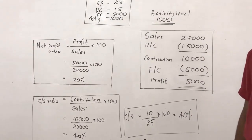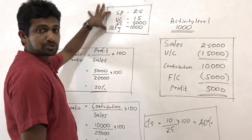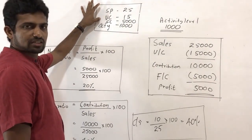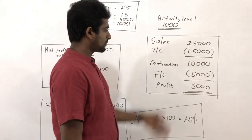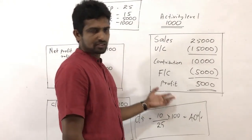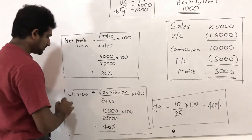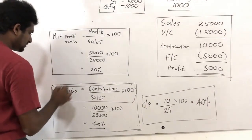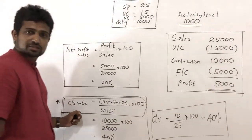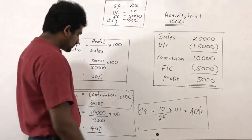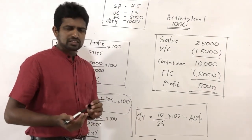To summarize the lesson so far: using given information — selling price per unit and variable cost per unit — you can calculate total sales, total variable cost, total contribution, and total profit. The key concept taught is the CS ratio. Please write and highlight the formula in your book. There are two approaches to calculate the CS ratio: using total information or using unit information.